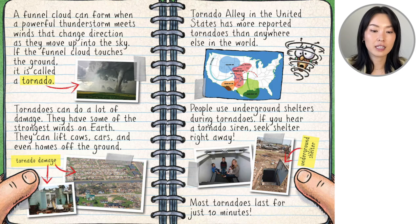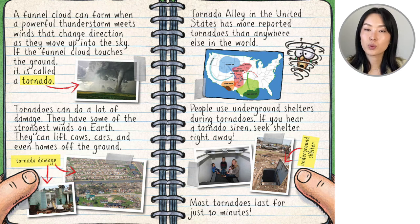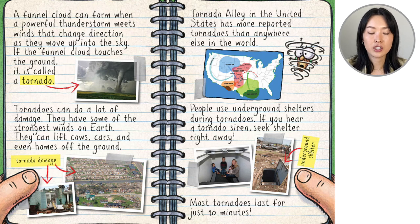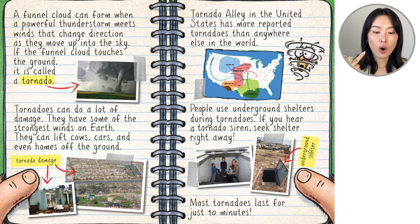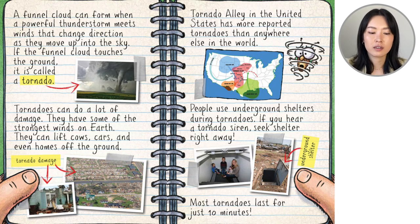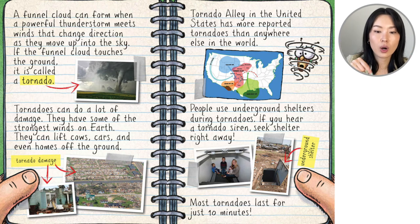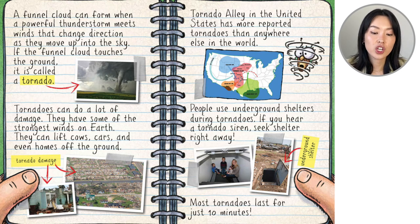A funnel cloud can form when a powerful thunderstorm meets winds that change direction as they move up into the sky. As the funnel cloud touches the ground, it is called a tornado. Tornadoes can do a lot of damage — they have some of the strongest winds on Earth. They can lift cows, cars, and even homes off the ground. Tornado Alley in the United States has more reported tornadoes than anywhere else in the world. People use underground shelters during tornadoes. If you hear a tornado siren, seek shelter right away. Most tornadoes last for just 10 minutes.